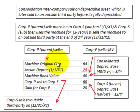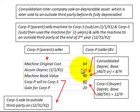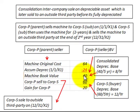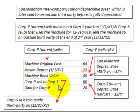Corp P, the parent and seller, had a machine with an original cost of $64,000. They had accumulated depreciation of $24,000 at the time of the sale on 1-1-X1, giving a machine book value of $40,000. Corp P then sells this machine to Corporation S for $60,000, resulting in a gain of $20,000 for the parent.